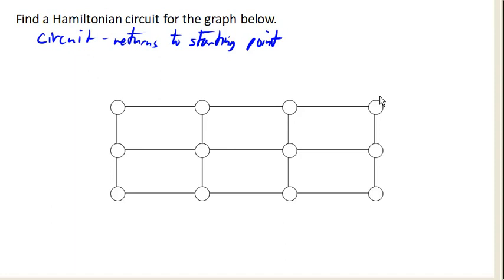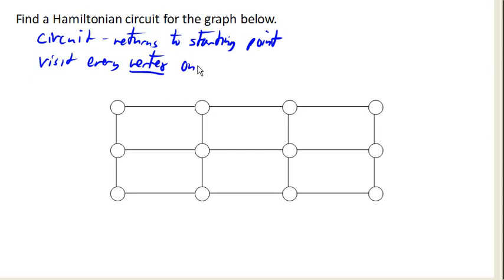A Hamiltonian circuit is different. In this case, we want to visit every vertex once, with no repeats. Because all we care about is the vertices, it doesn't matter whether we visit all the edges.